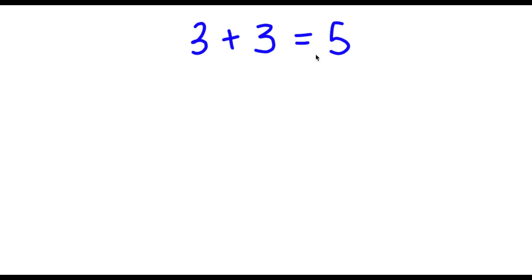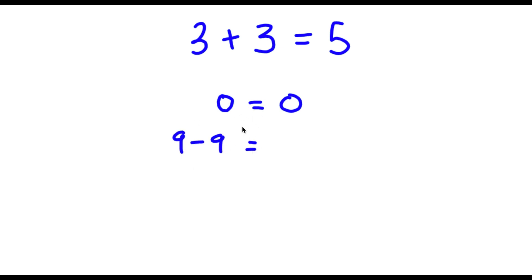Alright, so we have 3 plus 3 is equal to 5, and we want to prove this statement to be true. First off, let's say we have 0 equals 0. I'm going to start with this: 0 equals 0. This is just going by the rules of mathematics.